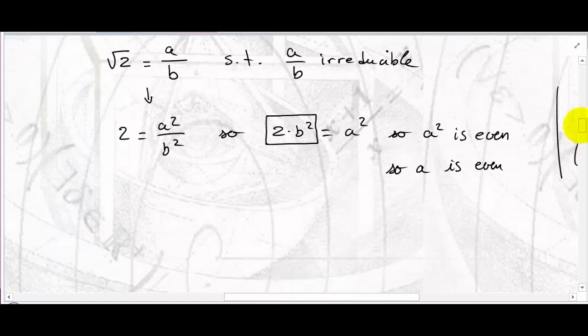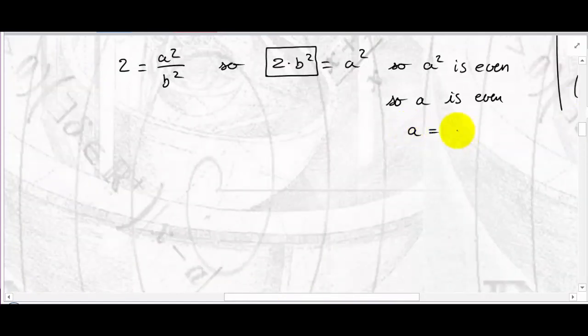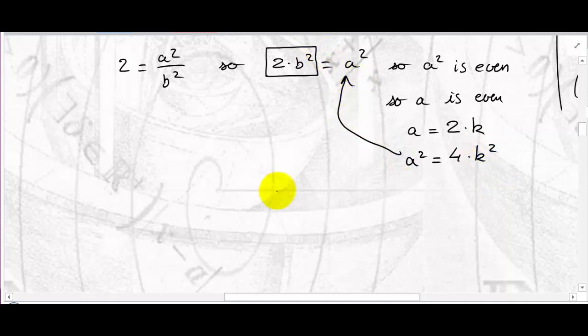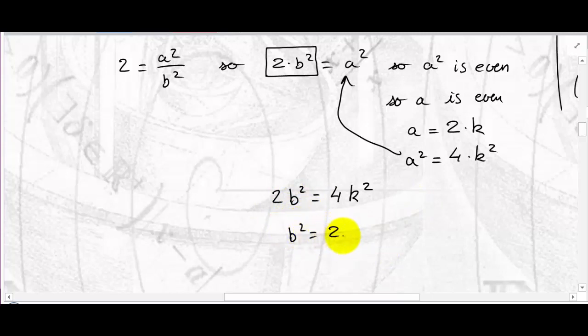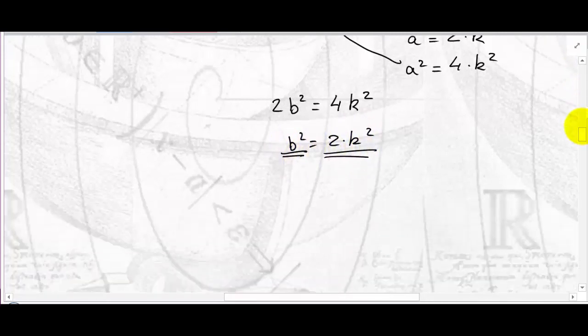So A is even, and therefore I can write A as 2k. Then A squared equals 4k squared. Plugging into 2B squared equals A squared gives 2B squared equals 4k squared. Dividing both sides by 2 gives B squared equals 2k squared. This means B squared is even, and therefore B is also even — so B equals 2p for some integer p.